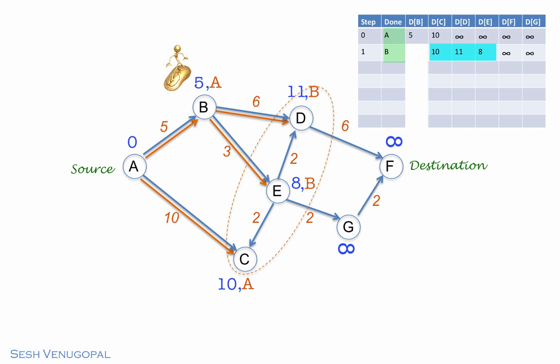On to the next iteration. Of the vertices in the fringe, E has the lowest distance, so it is removed and is done. Going to E, its neighbors are D, G, and C. Let's look at each in turn.